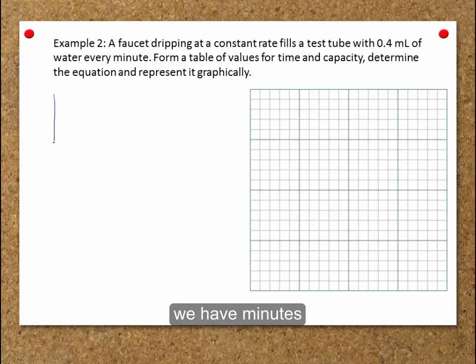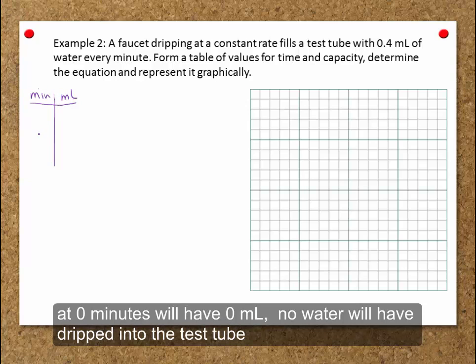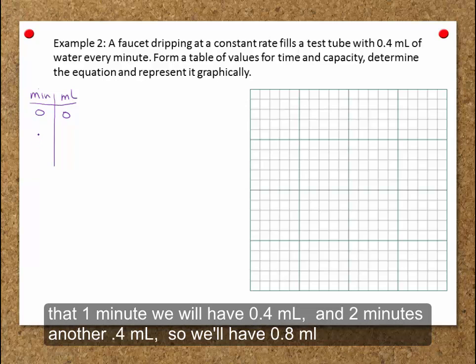Here's our table. We have minutes and we have milliliters. At zero minutes, we will have zero milliliters. No water will have dripped into the test tube. At one minute, we will have 0.4 milliliters.